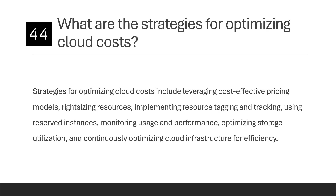What are the strategies for optimizing cloud costs? Strategies include leveraging cost-effective pricing models, right-sizing resources, implementing resource tagging and tracking, using reserved instances, monitoring usage and performance, optimizing storage utilization, and continuously optimizing cloud infrastructure for efficiency.